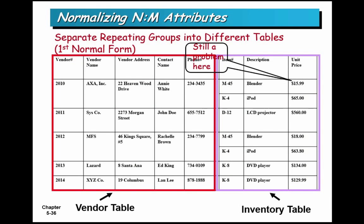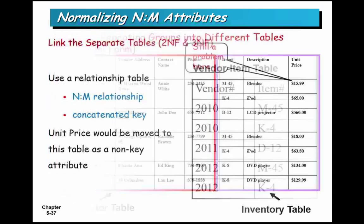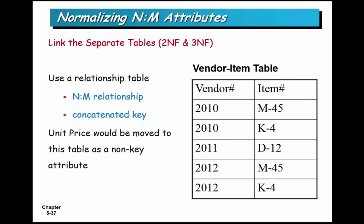If you remember correctly, what we did here is we split off the item table. And we had a problem still because you had two items with different price, the same item with two different prices. So we realized we needed to have a vendor item relationship table because there was a many-to-many relationship between vendors and items. And the unit price would be an attribute on the relationship table. So you solve for a many-to-many relationship and you put the unit price on the table. That's where we left off.